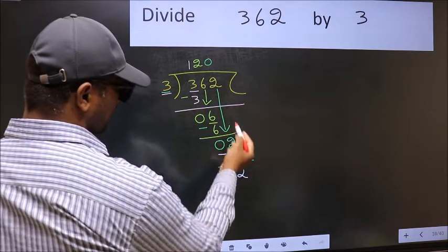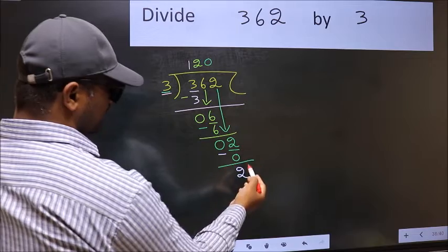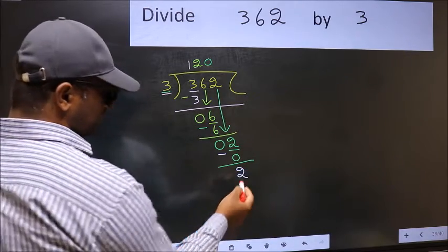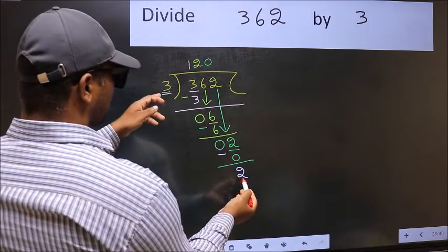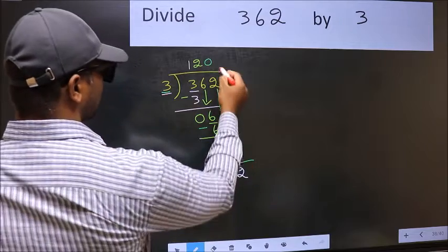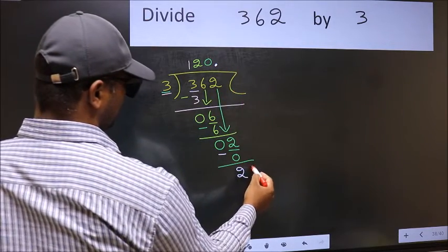Over here, we did not bring any number down, and 2 is smaller than 3. So now we can put a dot and take 0.